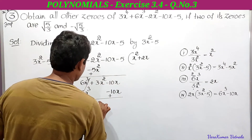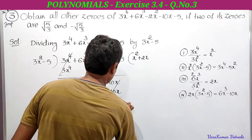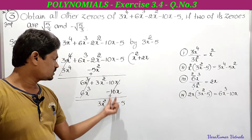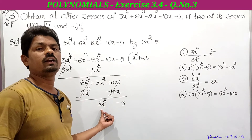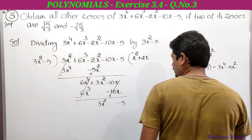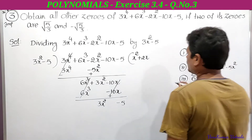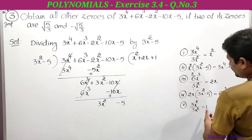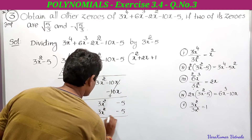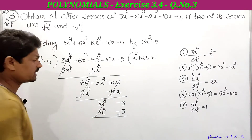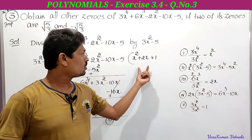After subtraction, signs change to plus: 6x³ - 6x³ cancels. The 3x² term remains as usual. -10x + 10x cancels. Bring down -5. The new dividend is 3x² - 5. Divide 3x² by 3x² to get 1. Write 1 in the quotient. Multiply: 1 × (3x² - 5) = 3x² - 5. Subtract: 3x² - 3x² cancels, -5 + 5 cancels. The remainder is 0.